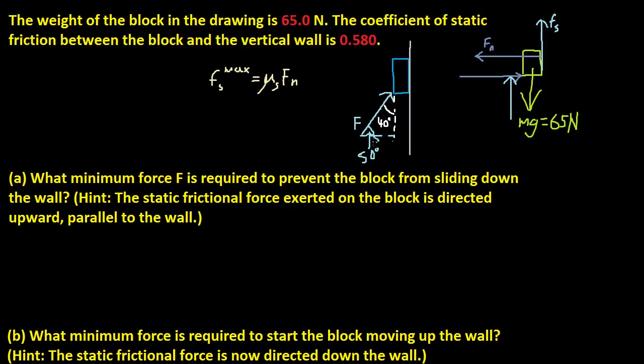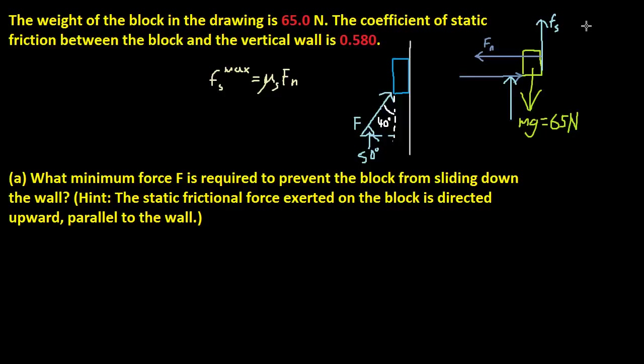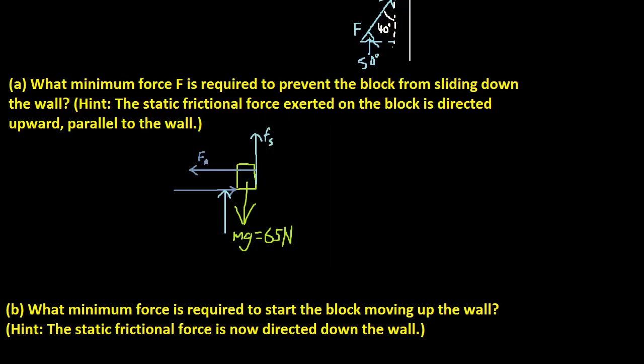So this angle right here is 50 degrees. If you look at that angle and you want to find the horizontal, you do cosine, so that's how I got it. Using this diagram, let's try to figure out A. I'm going to bring this diagram down right here.